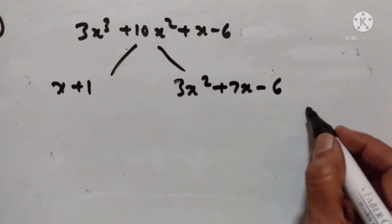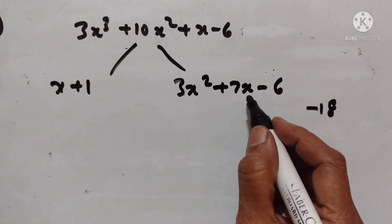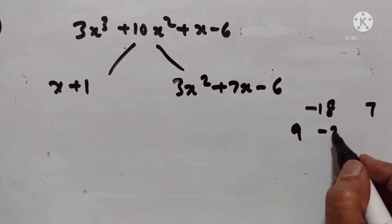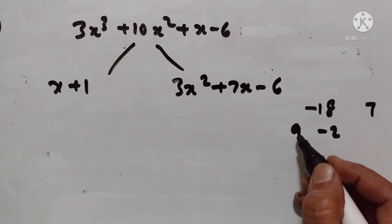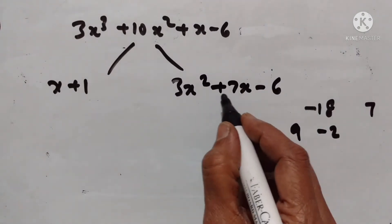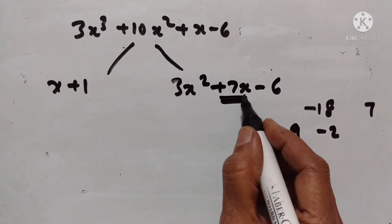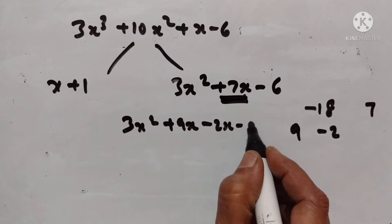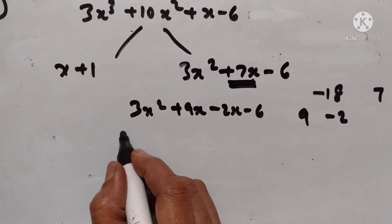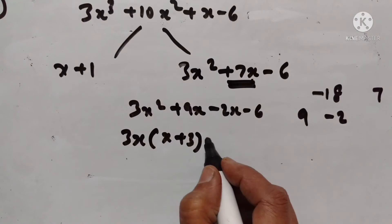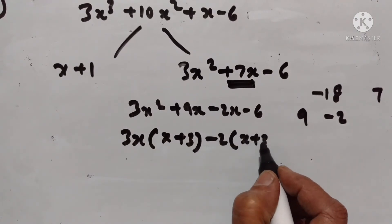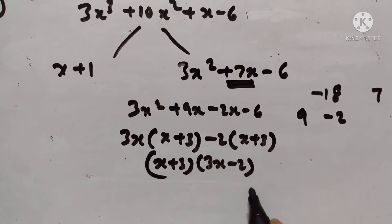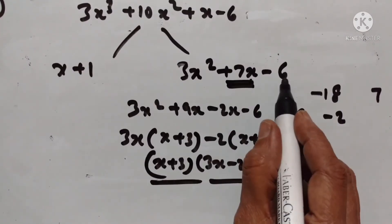Splitting the middle term: product is -18 and sum is +7. So 9 - 2 = 7 and 9 × (-2) = -18. This can be split into +9x and -2x. So 3x² + 9x - 2x - 6 = 3x(x + 3) - 2(x + 3) = (x + 3)(3x - 2).